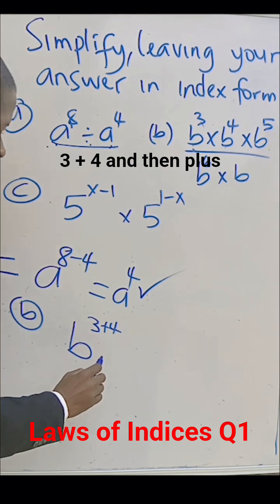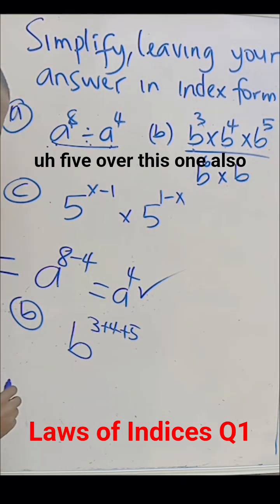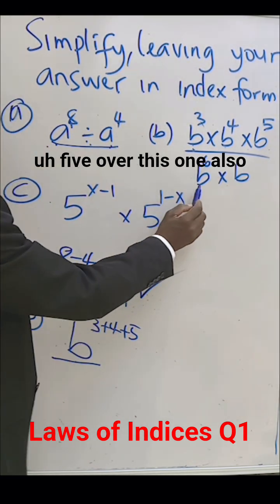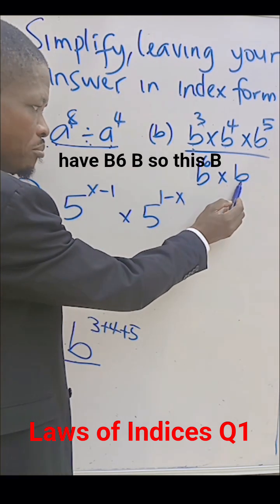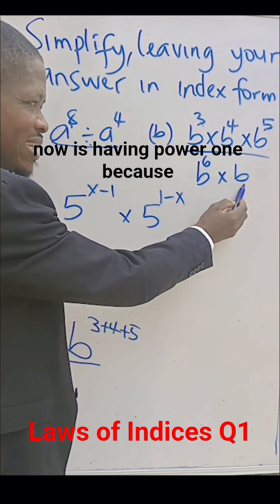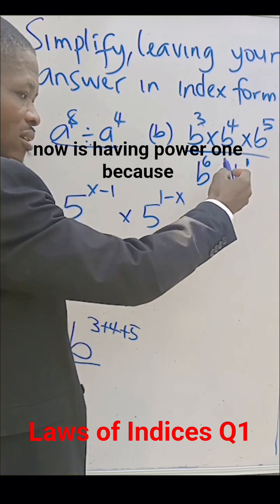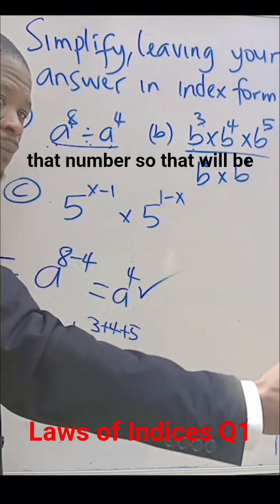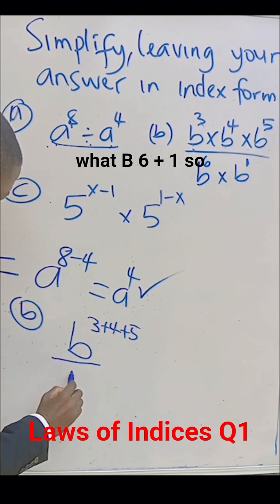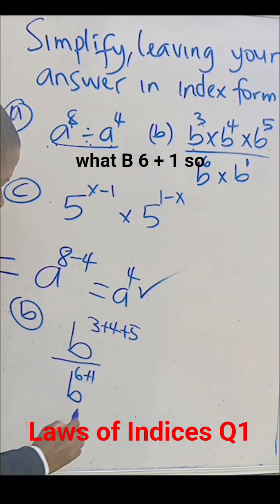3 plus 4 and then plus 5. Over this one, in the denominator, you have B to power 6 times B. So this B now is having power 1 because anything to the power of 1 is that number. So that will be what? B to power 6 plus 1.